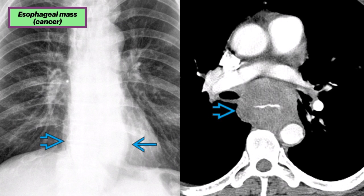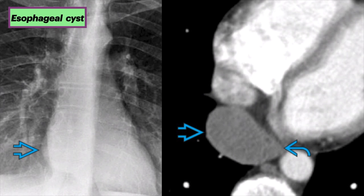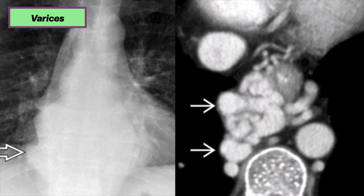Biopsy confirmed esophageal carcinoma. In contrast to the previous case, this one was benign. On the left is a chest X-ray of an esophageal duplication cyst. There is a subtle abnormal convexity of the lower third of the azagoesophageal recess. The corresponding axial CT shows an ovoid, water-attenuating mass in the visceral mediastinum, abutting the esophagus and consistent with a congenital foregut cyst. In this case, an esophageal duplication cyst was diagnosed, which may be indistinguishable from a bronchogenic cyst on imaging.